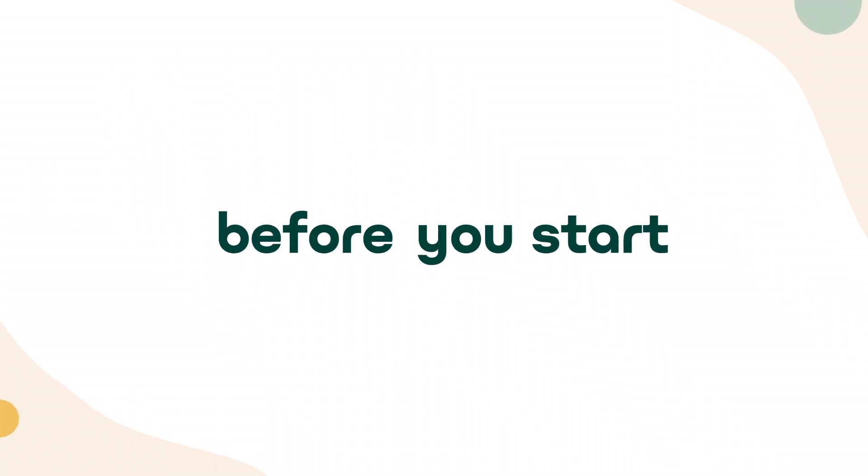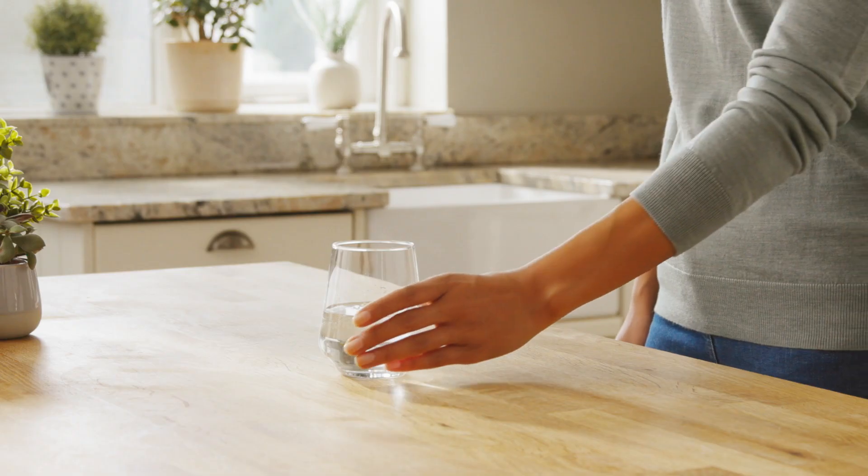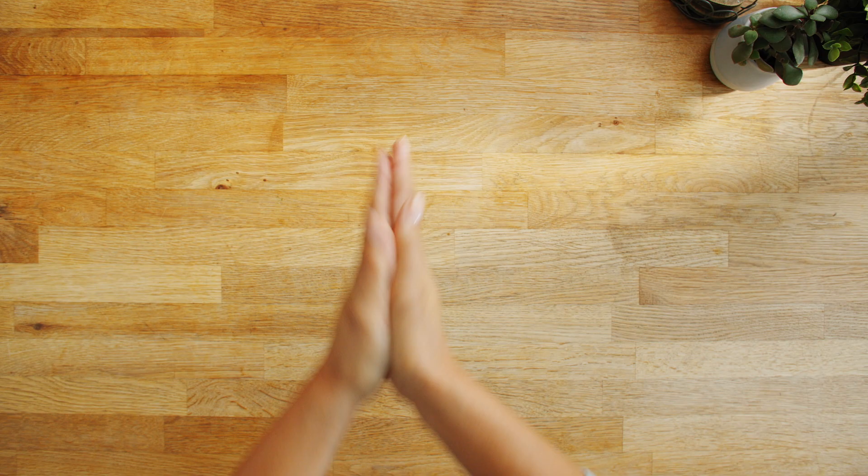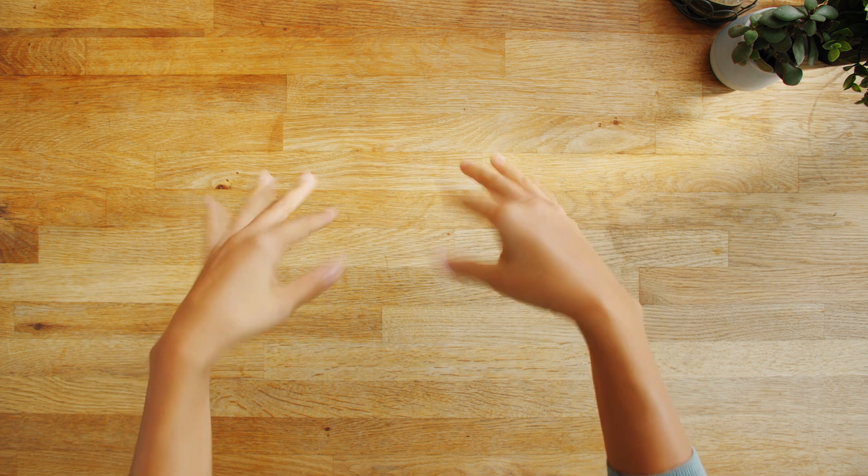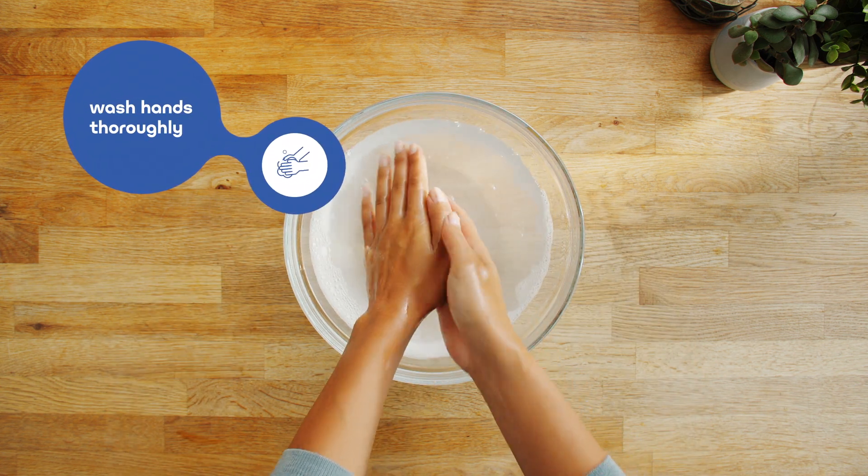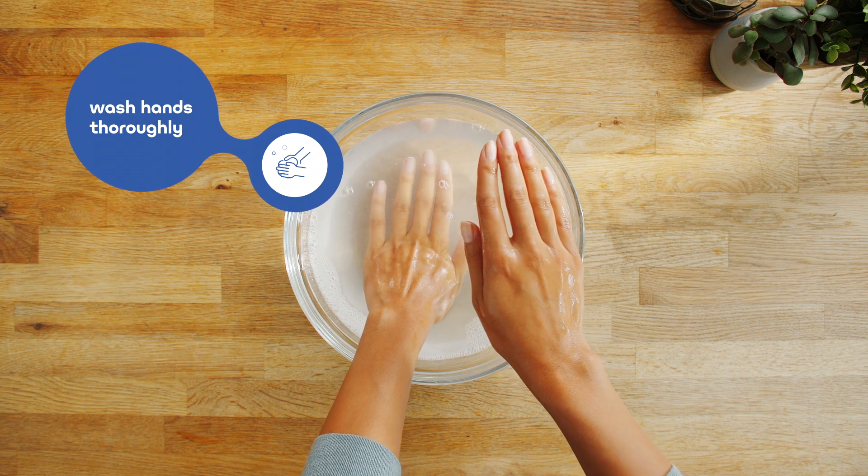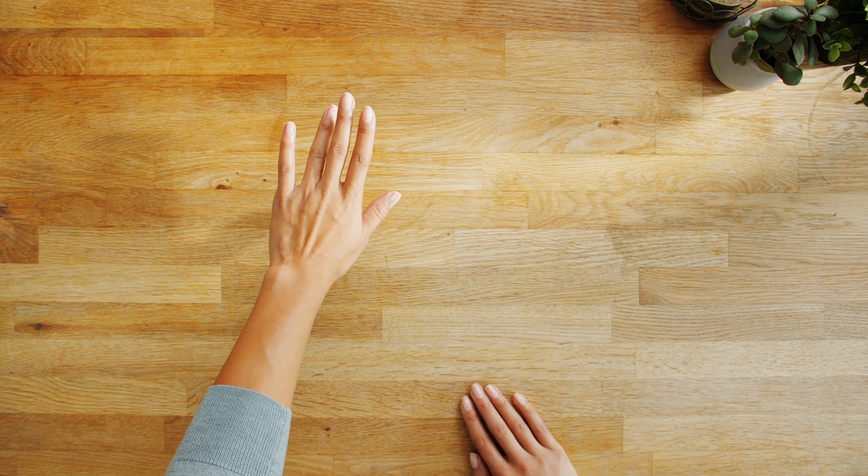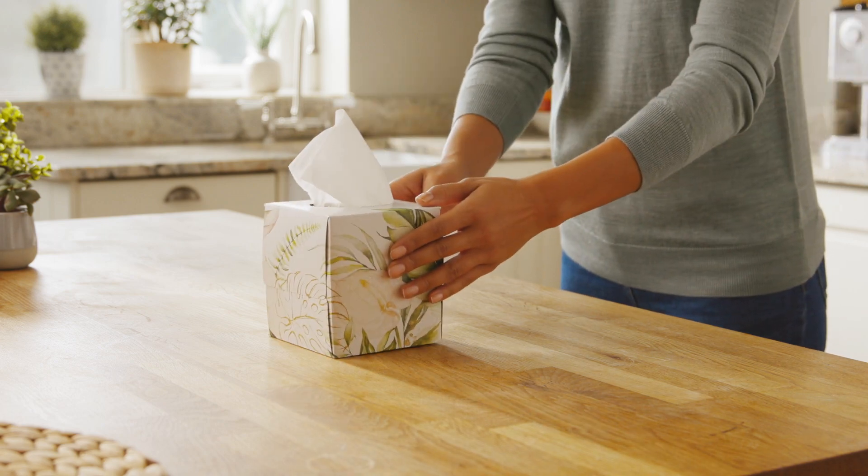Before starting blood collection, please follow these top tips. Drink a glass of water 30 minutes prior. Doing some gentle exercise before you start can help increase blood flow. Wash your hands with warm soapy water and leave the hand you wish to collect blood from in warm water for 2-3 minutes. Use your middle or ring finger for collection. Have a clean tissue to hand.